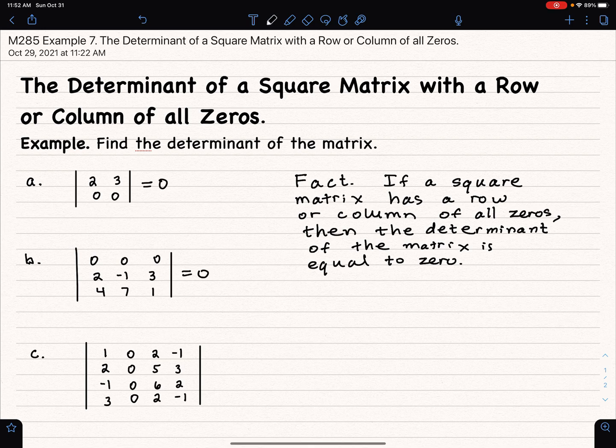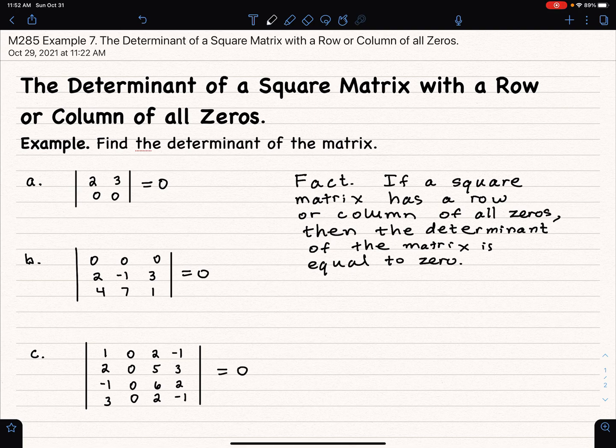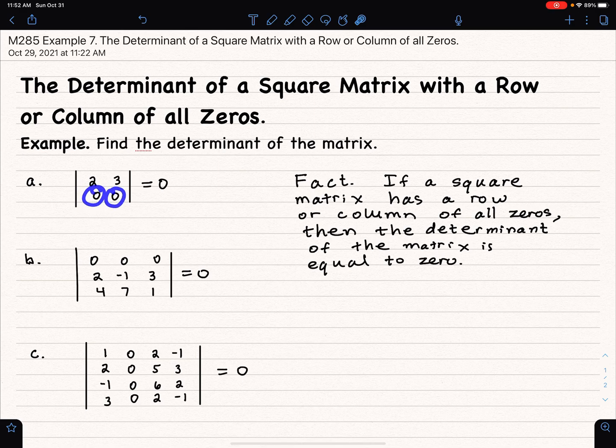So there's not really any work to show here. You may ask why. Well, a proof would be - we've established that you can find the determinant by expanding across any row or any column. And if you say in this first example a, expand across the second row,